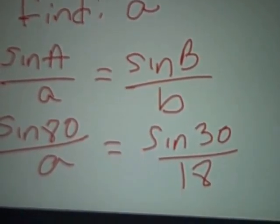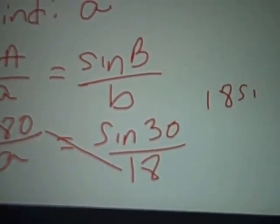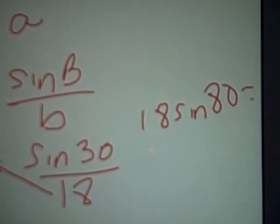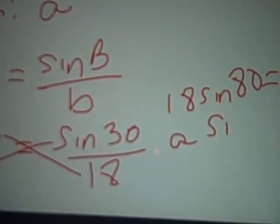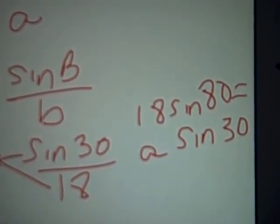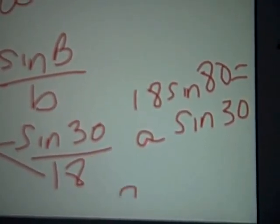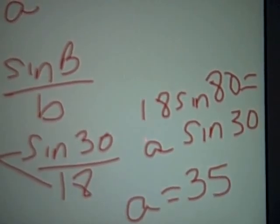Cross multiply: 18 times sine of 80 equals a times sine of 30, and of course divide by sine 30. If you rounded to the nearest whole number, you should end up with a equal to 35 centimeters.